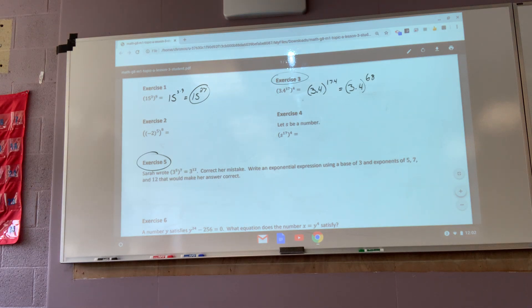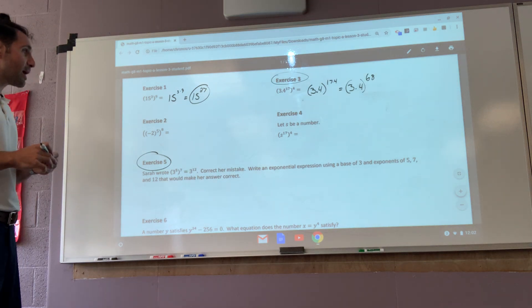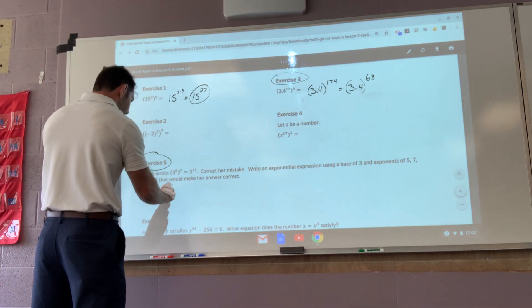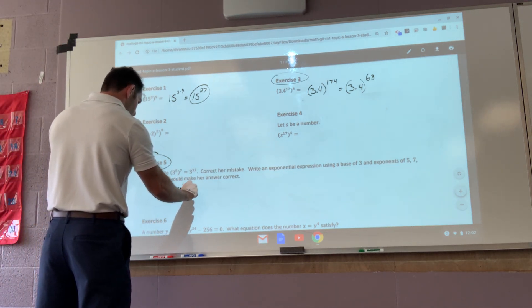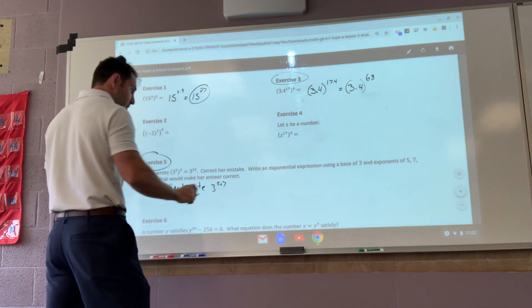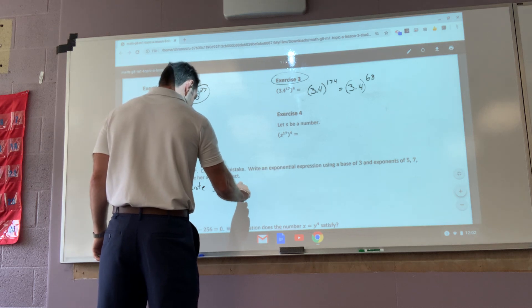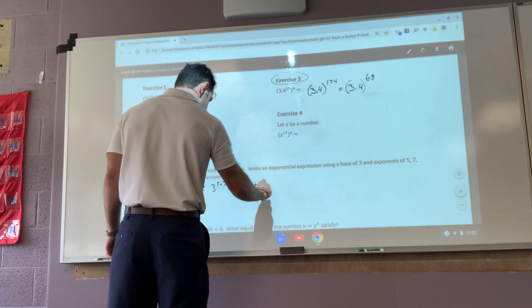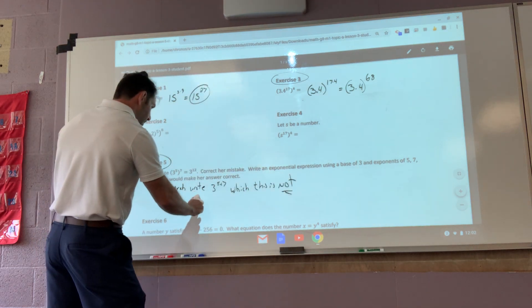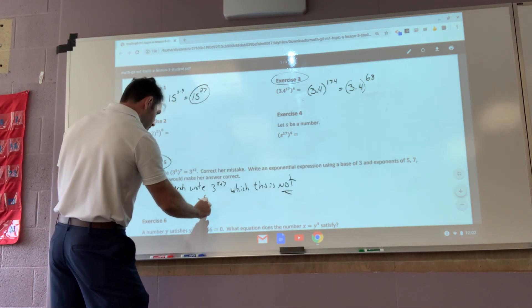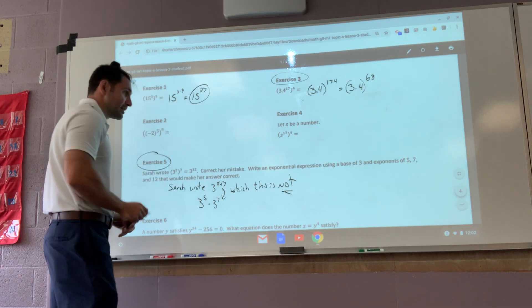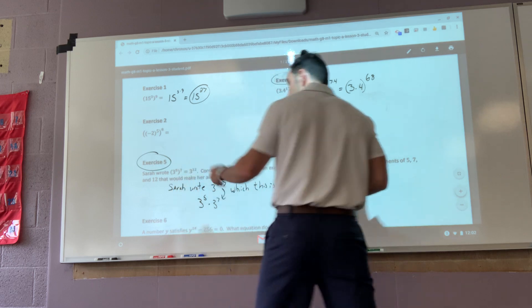Number five. Sarah wrote three to the fifth to the seventh equals three to the twelfth. Correct her mistake. What Sarah did, Sarah wrote three to the five plus seventh, which this is not. Okay? That would have been three to the fifth multiplied by three to the seventh. That's what that is.